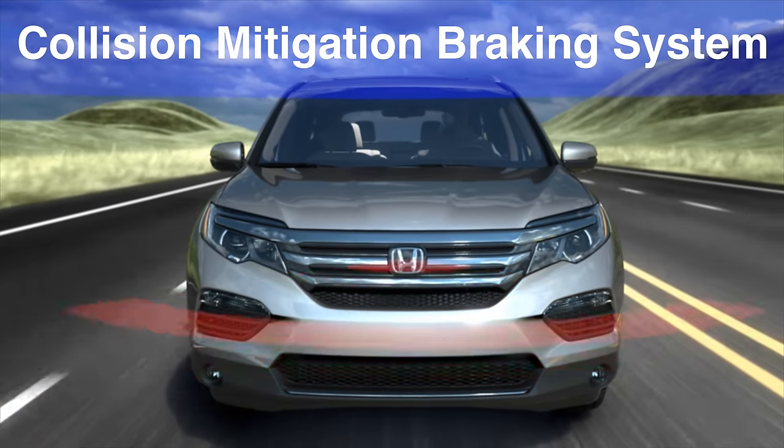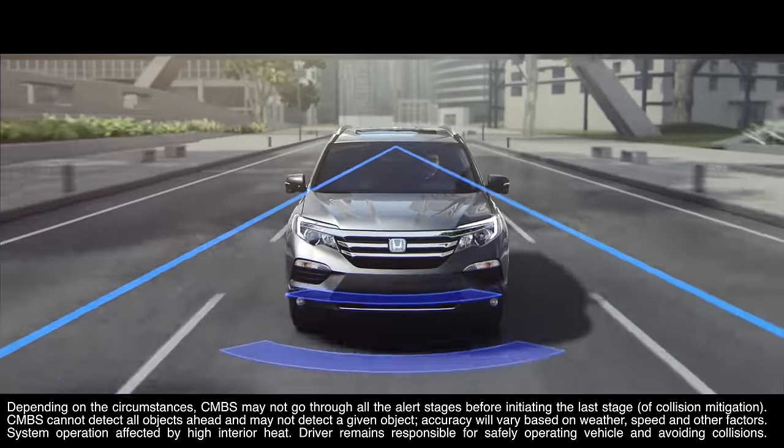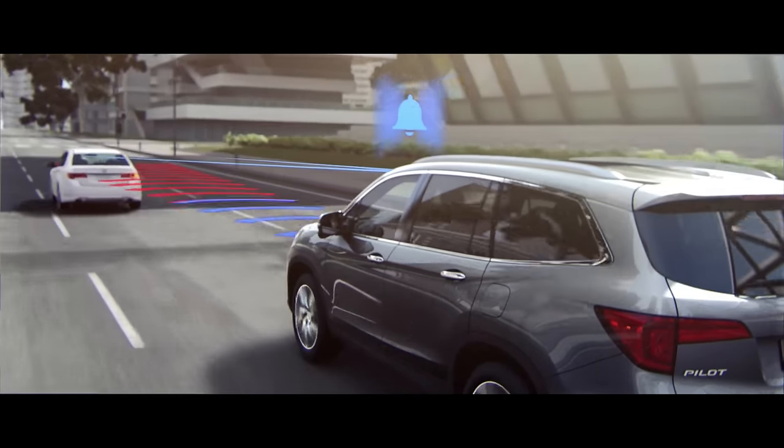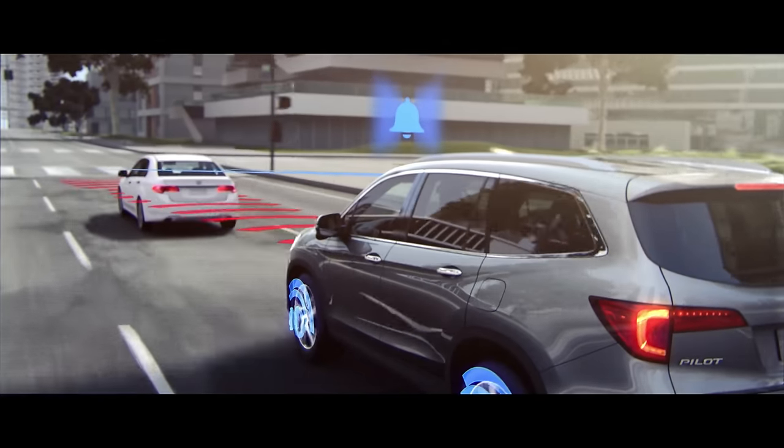Now, how does the collision mitigation braking system work? The goal of the system is to alert the driver if a collision with a detected vehicle is likely, and then to apply the brakes to reduce the severity of a collision if it's unavoidable.